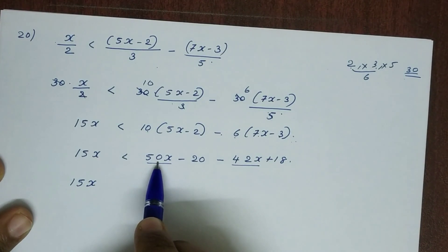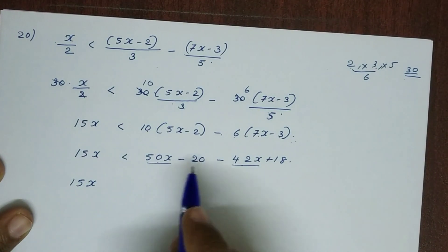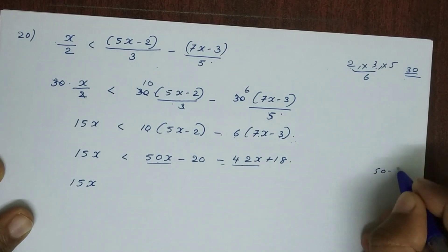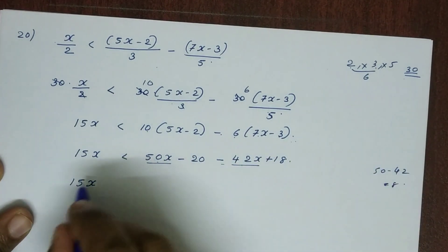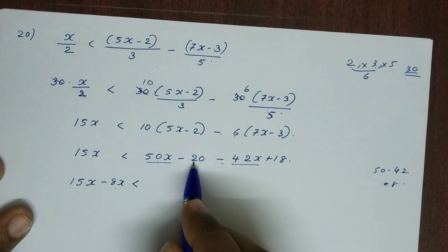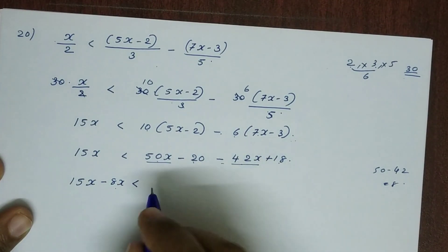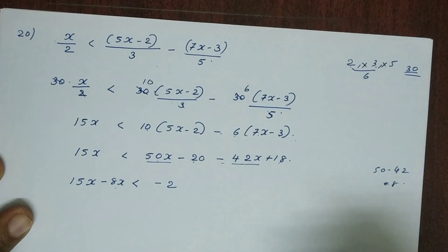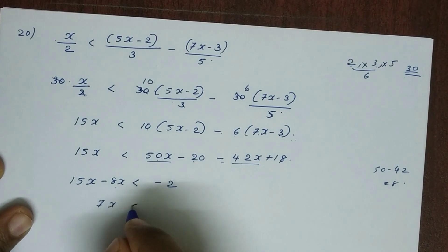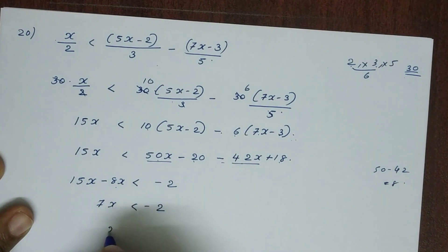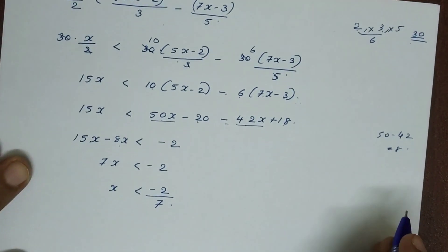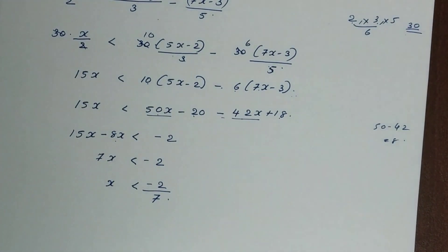Expanding: 15x is less than 50x minus 20 minus 42x plus 18. Combining like terms: 50x minus 42x gives 8x, and minus 20 plus 18 gives minus 2. So we have 15x minus 8x less than minus 2, giving 7x less than minus 2. Therefore x is less than minus 2 divided by 7.